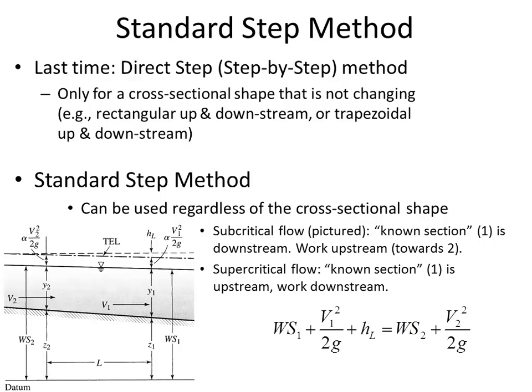In a diagram example with subcritical flow, location one is downstream because we happen to know the depth there, as well as how high the channel bottom is above the datum, the velocity head, and the head loss. Location two is the section where we don't know the flow depth. The standard step method applies when something is changing between one and two — the channel is getting wider, narrower, or changing from a rectangle to a trapezoid.